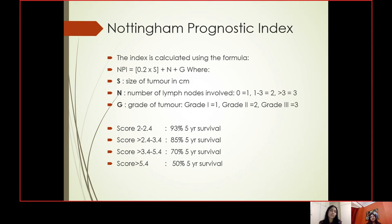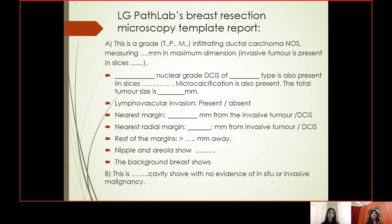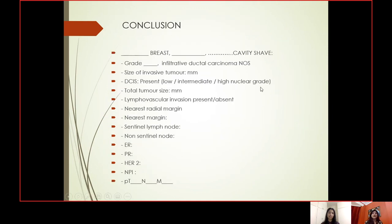We should also mention the NPI — Nottingham Prognostic Index — which is based on the size of the largest invasive focus, the number of lymph nodes involved, and the grade of the tumor. This can be very helpful in predicting the 5-year survival rate of patients. In conclusion, include all important parameters in the breast report including ER, PR, and HER2. If these were done on previous core biopsies, they do not need to be repeated on the current excision specimen — just reference the histology numbers. Also include NPI and TNM staging.